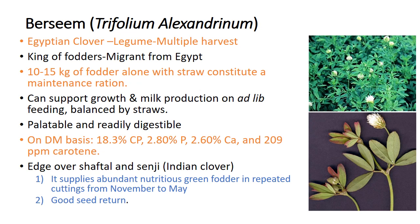Ten to 15 kg of berseem fodder along with straw can fulfill the maintenance requirement of an unproductive or dry animal. It can support growth and milk production when fed ad libitum and balanced with straw. Berseem is highly palatable and readily digestible; on a dry matter basis it contains about 18.3 percent protein, 2.8 percent phosphorus, 2.6 percent calcium, and 209 mg/kg carotene. It has an edge over shaftal or Indian clover because it supplies abundant nutritious green fodder in repeated cuttings from November to May, and it also produces good seed.